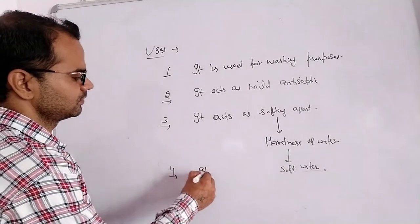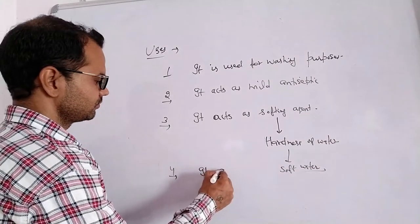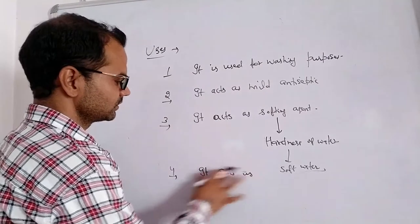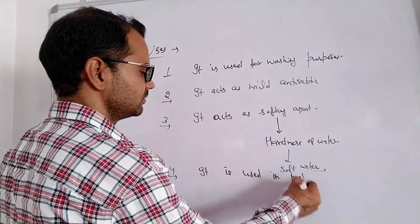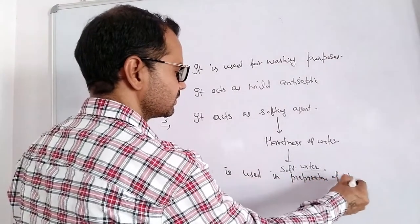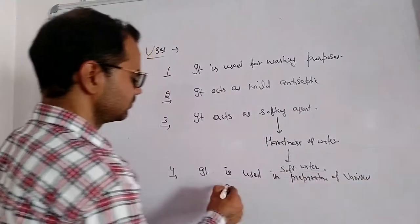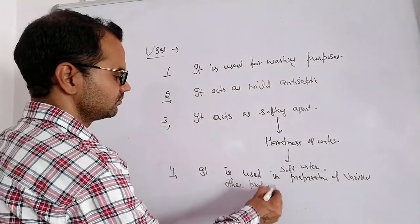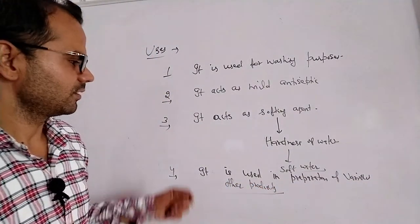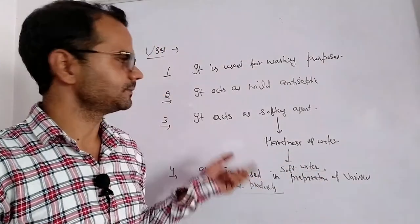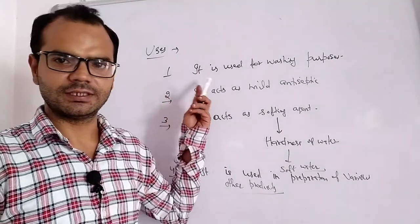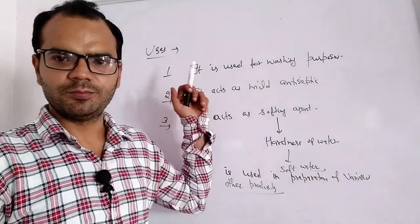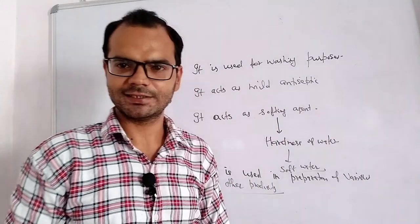It is also used in the preparation of various other products. So these are the two salts: caustic soda and washing soda. In the next lecture we will do baking soda and gypsum. Keep exploring my channel and stay at home. Thank you.